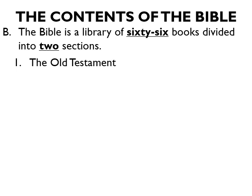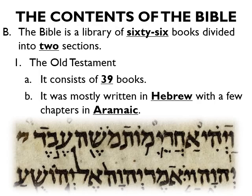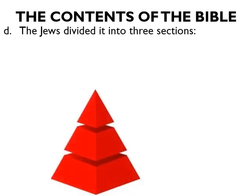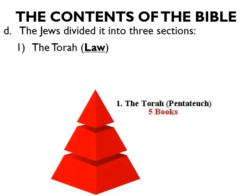The Old Testament consists of 39 books. It was mostly written in Hebrew with a few chapters in a language called Aramaic. The Old Testament focuses primarily upon the nation of Israel. Interestingly, the Jews divide the Old Testament into three sections: the Torah, meaning the law — the first five books, commonly called the Pentateuch; secondly, the Nevi'im, the prophets; and thirdly, the Ketuvim, which means writings.